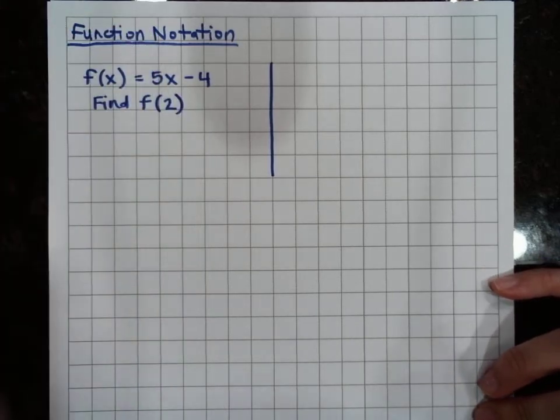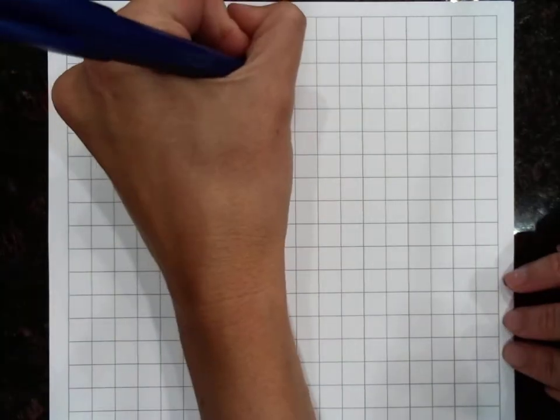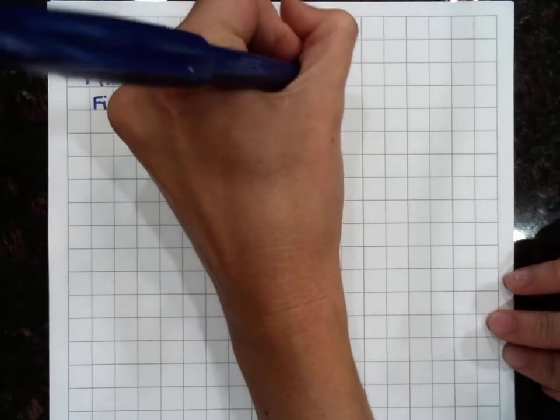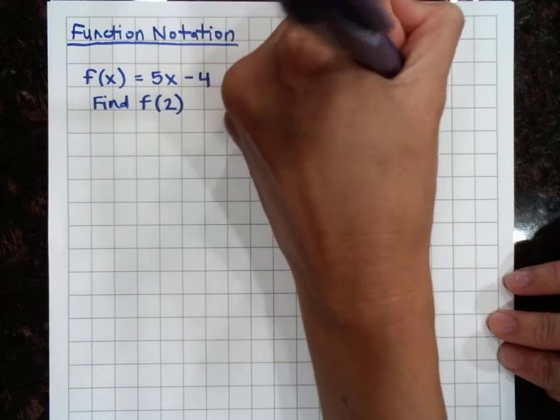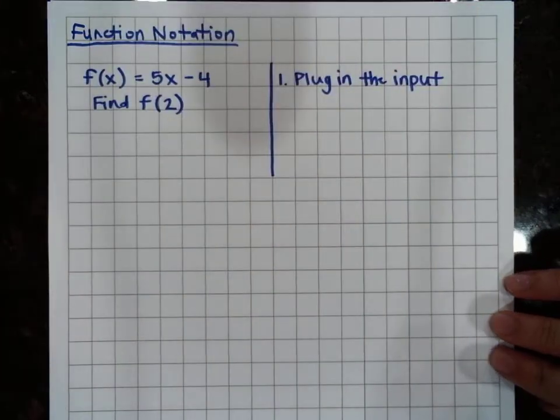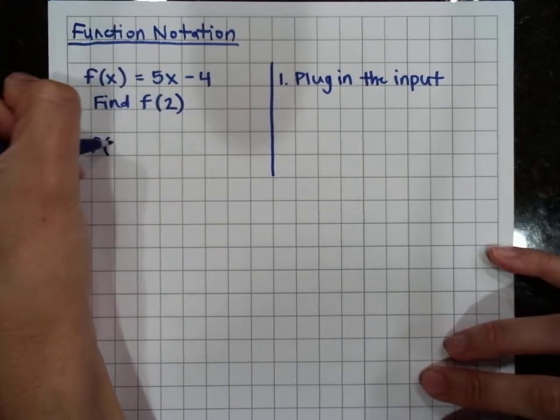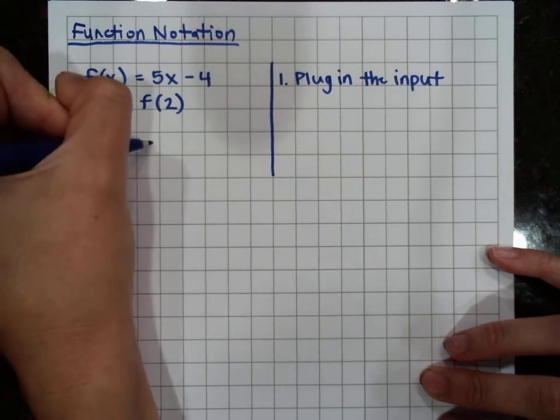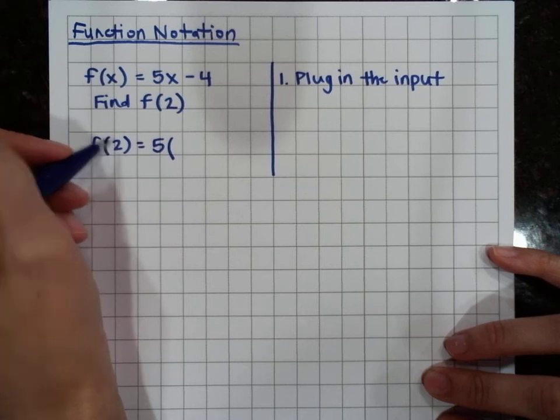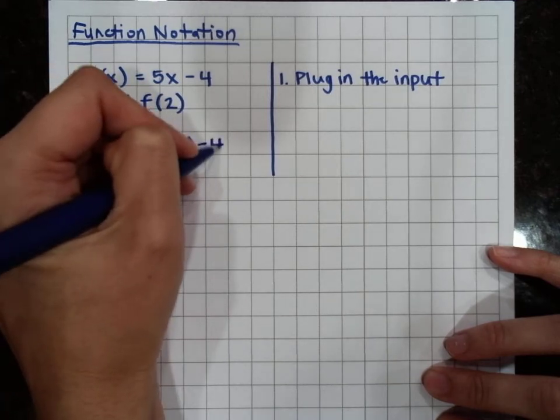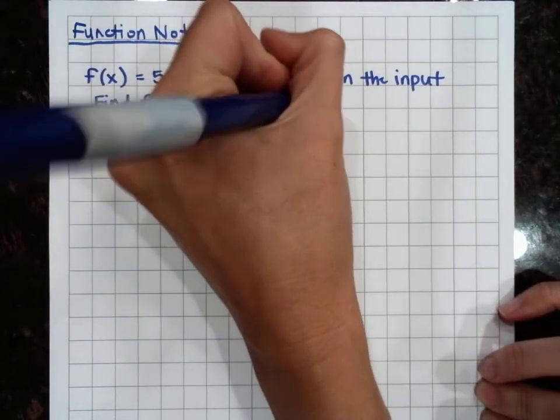And so what it's saying is when the input is 2, what is the output? So first you're going to plug in the input. So if the input is 2, we're going to say f of 2 equals 5 times x, which we said x is 2, minus 4. And then step 2 is we are going to simplify.